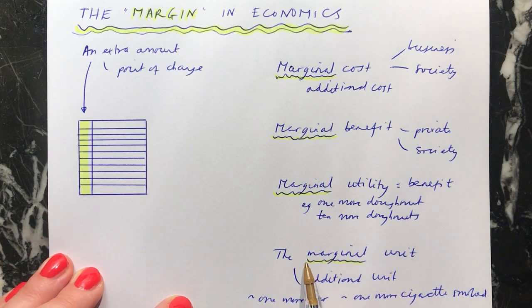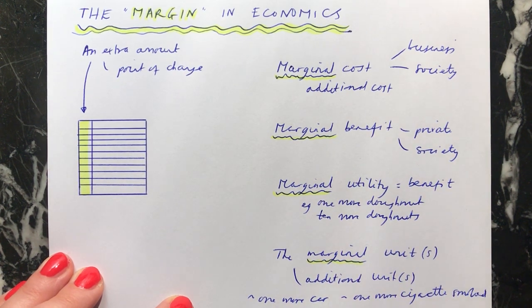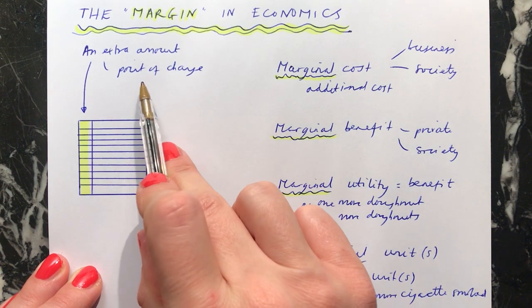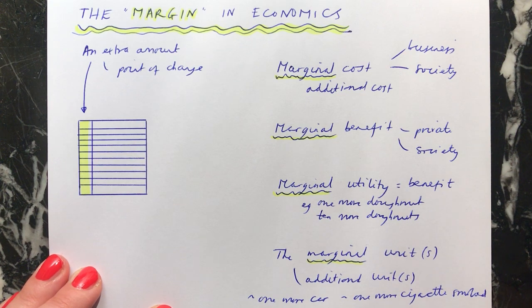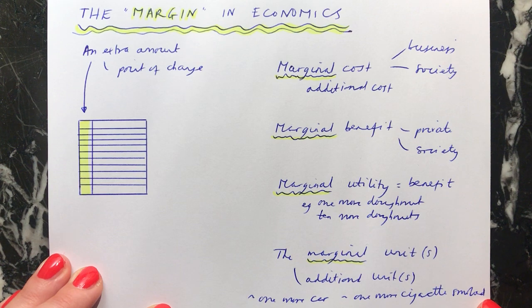In all of these cases, you're looking at where a marginal unit — one more unit or marginal units — are being consumed. This shows economists how there will be an impact of this extra amount being consumed or produced. This point of change is the additional amount being consumed or produced, and economists want to know what the impact of that will be. Hopefully, when you're looking in other contexts at the margin — marginal cost, marginal benefit, marginal utility, the marginal unit, or any other instance of marginal — you will now be able to understand what this means and find it easier to assess the impact in any given situation.